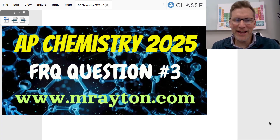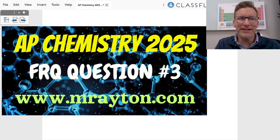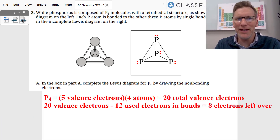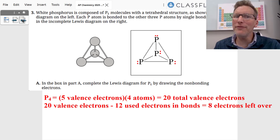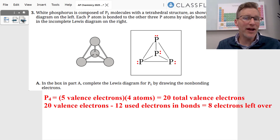Hey, this is Mr. Aiden. This is the AP Chemistry 2025 free response question number three from the exam that just happened in May. It starts off with white phosphorus, which is composed of P4 molecules, and we have to finish our Lewis dot structure.